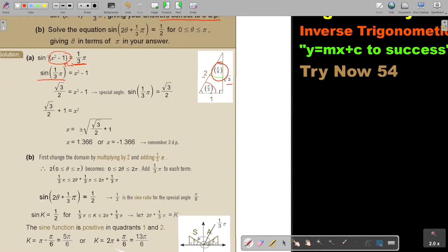Let's look at number B. Solve the equation sin, it's not inverse, it's 2 theta plus a third pi equals a half. They give you theta is bigger than equal to zero and smaller than equal to pi. This is almost like previous videos. It's just combined in this question. Giving theta in terms of pi means you must work with the special angles.